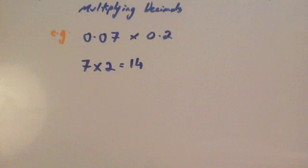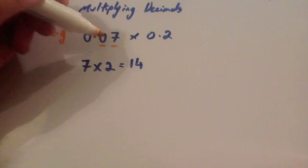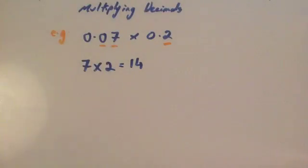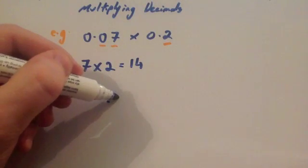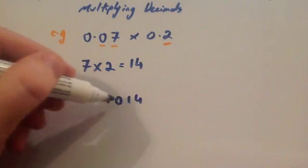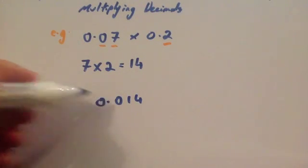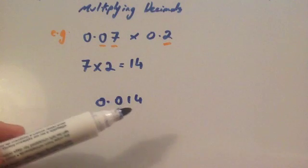Count the number of digits after the decimal points in the question. You've got 1, 2 digits after the decimal point in the first number, and 1 digit after the decimal point in the second number. So altogether you've got 3 digits after the decimal point in the question. Therefore you must have 3 digits after the decimal point in the answer. With only 1 and 4 available, you write 0.014, placing a zero between the decimal point and the 14. So 0.07 multiplied by 0.2 equals 0.014.